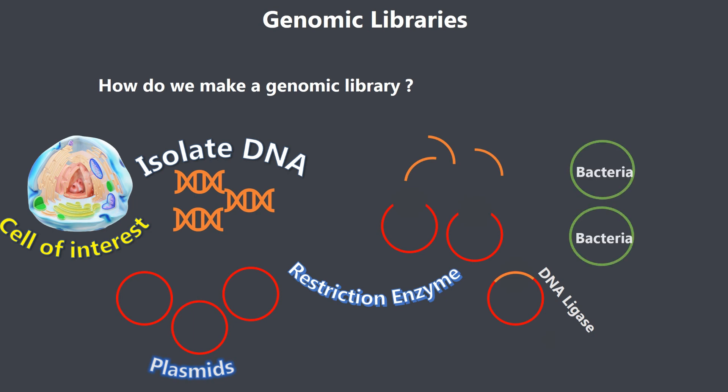It is mostly very easy to transform a plasmid into bacteria. One common way to transform is to use heat shock, whereby you heat the bacteria and then cool it down rapidly, which causes little holes to open up that allow the plasmid to be taken up by the bacteria.